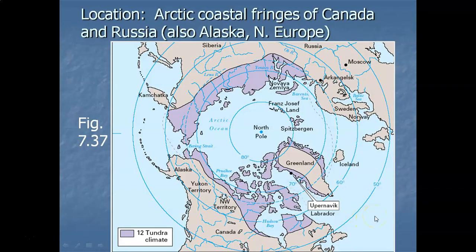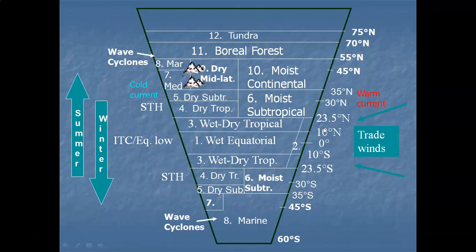In terms of world locations, we've got a map focusing on the North Pole and the Arctic Ocean. This climate is located along the Arctic coastal fringes of Alaska and Canada, here's Greenland where our climate graph is located, and then Russia. Those are the major world locations. Plotting that on a hypothetical continent, it sits at very high latitude, well above the Arctic Circle — and there's our tundra climate.